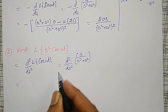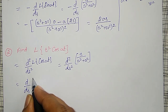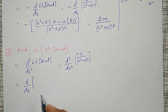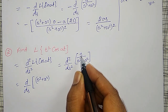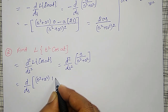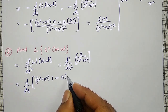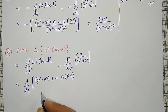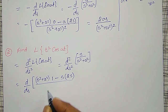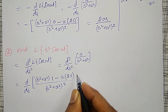First derivative: applying the u by v rule, s squared plus a squared times differentiation of s with respect to s is 1, minus s times differentiation of s squared plus a squared which is 2s. Whole divided by s squared plus a squared, the whole square.